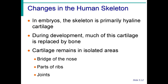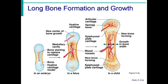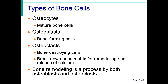There are many changes in the human skeleton from youth to old age. In the embryo, the skeleton is primarily made of cartilage. During development, much of this cartilage is replaced by bone. Cartilage remains in isolated areas like the bridge of the nose, parts of the ribs, and the joints. The epiphyseal plate allows for growth of long bones during childhood. Long bones stop growing at around age 18 in females and age 21 in males — this process is called epiphyseal plate closure.